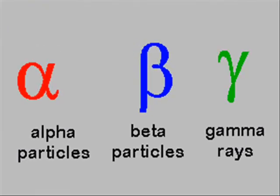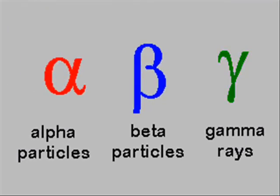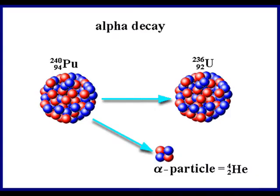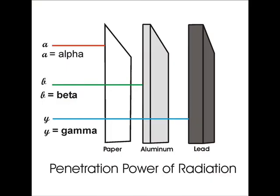Alpha particles consist of two protons and two neutrons bonded together into particles identical to a helium nucleus. They are a highly ionizing form of particle radiation and have low penetration. Alpha particles are emitted by radioactive nuclei such as uranium or radium in a process known as alpha decay. Alpha particles are easily absorbed by materials.